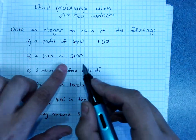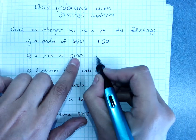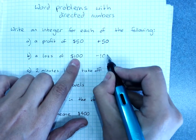A loss of $100 is moving down, you've got less money. So that could be described as negative 100.